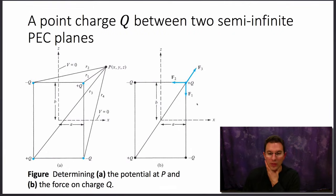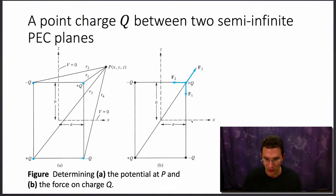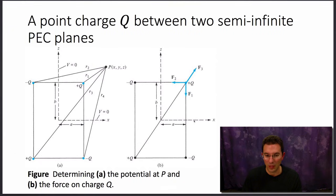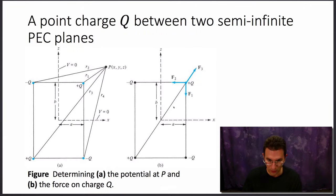This arrangement satisfies the boundary conditions on both conducting surfaces. Along one surface, the tangential electric field due to one charge is exactly cancelled by the tangential field due to its paired image charge. Similarly along the other surface, the tangential field from one charge is cancelled by the tangential field from the other. We cannot have any tangential electric field along either conducting surface, and this four-charge configuration ensures that is satisfied.